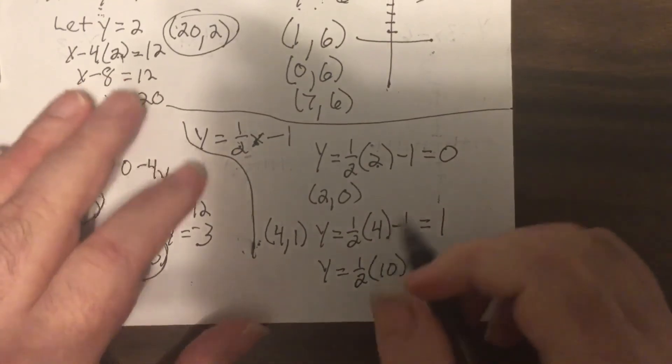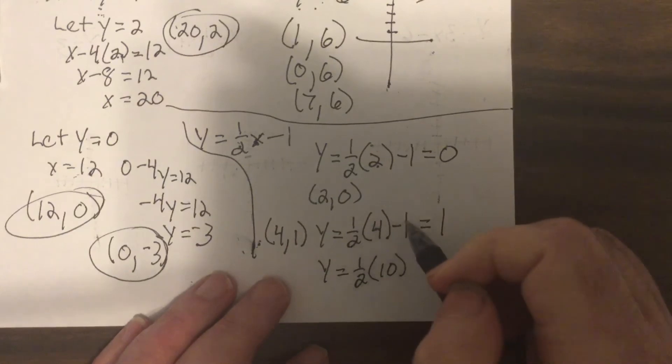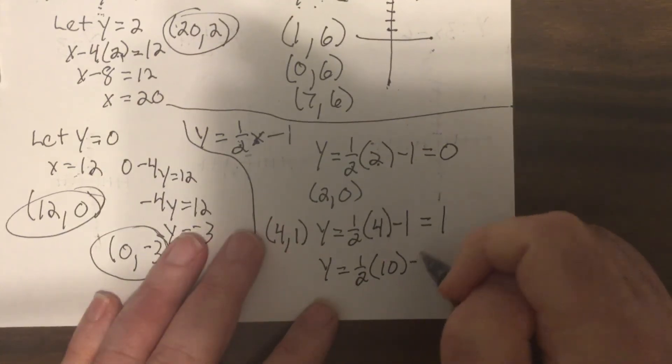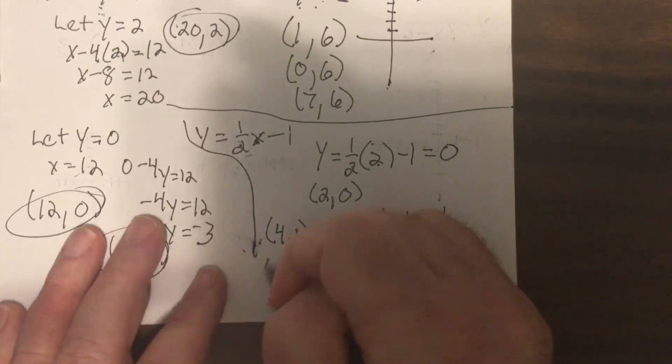Let's put in ten. Again, could you do one? Sure, you're just gonna have fractions, that's okay. One half of ten is five, minus one is four, so it would be ten, four.